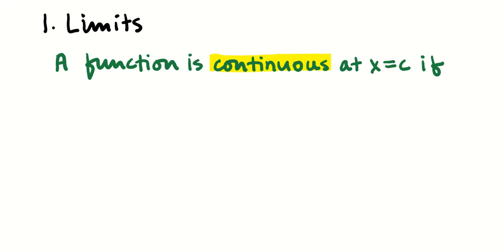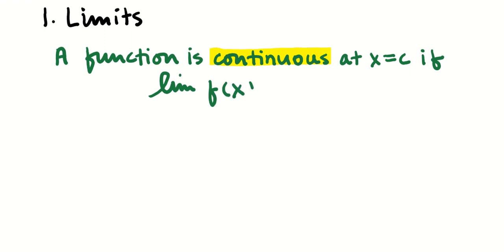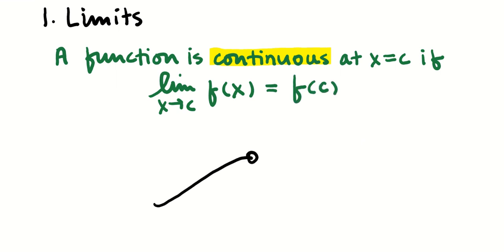We also need to know the definition of continuity. A function is continuous at an x value if the limit of the function as x approaches that value is equal to the value of the function. If there's a hole in the graph but the value of the function equals the limit, then it's continuous at that point.